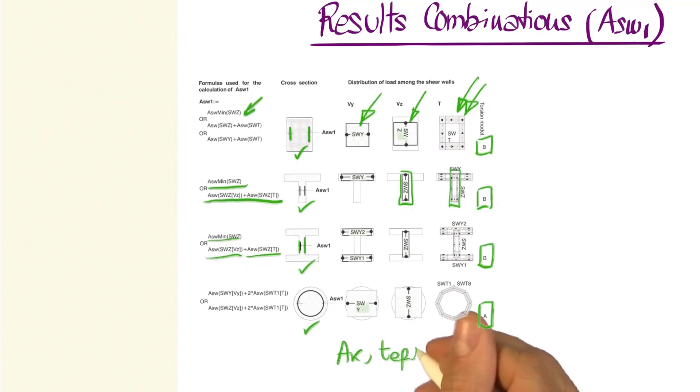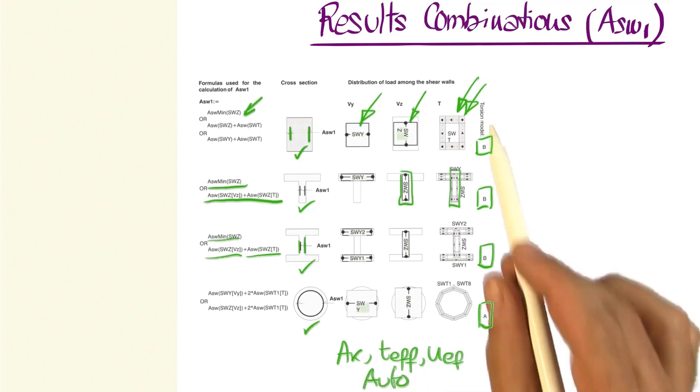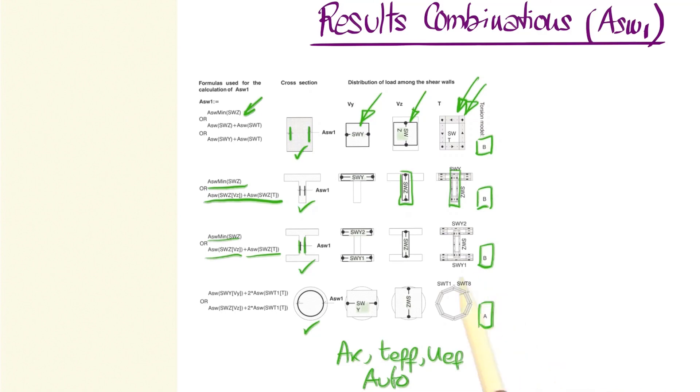the effective thickness, and the effective perimeter perfectly coincide with the values of the circumference, we'll have to choose the automatic model for torsion, because if we use the type A model, the program will introduce a series of shear walls. In this example, it would include eight,